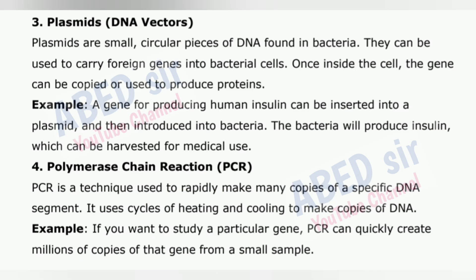3. Plasmids – DNA Vectors. Plasmids are small, circular pieces of DNA found in bacteria. They can be used to carry foreign genes into bacterial cells. Once inside the cell, the gene can be copied or used to produce proteins. For example, a gene for producing human insulin can be inserted into a plasmid and then introduced into bacteria.